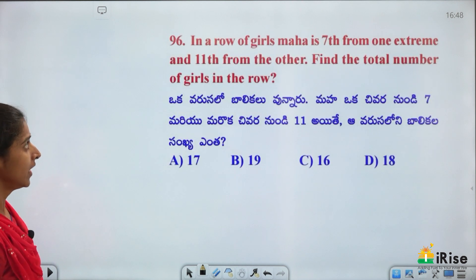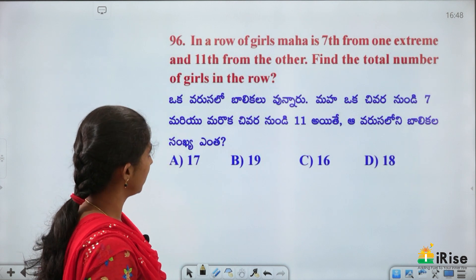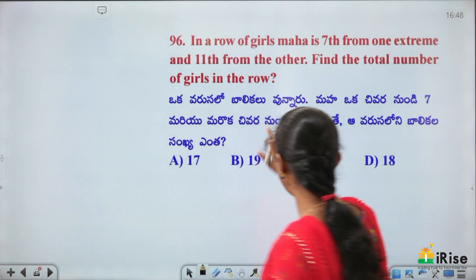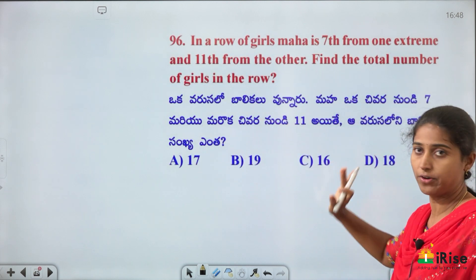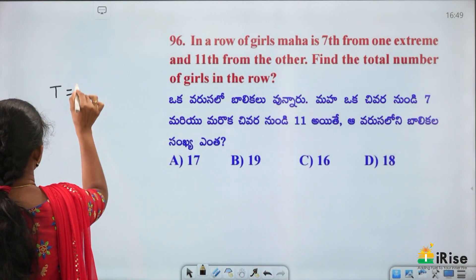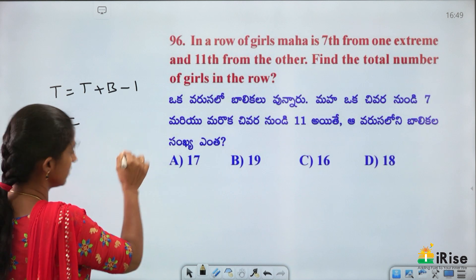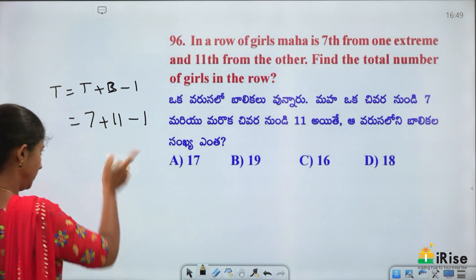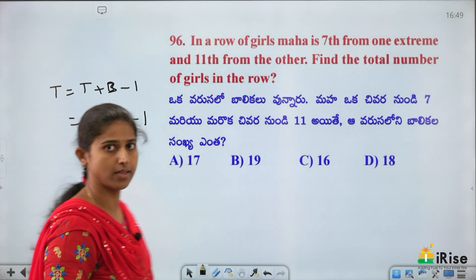In a row of girls, Maha is 7th from one end and 11th from the other end. Total number of girls = 7 + 11 − 1 = 17. Answer: 17 girls.